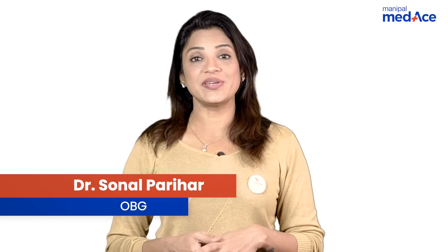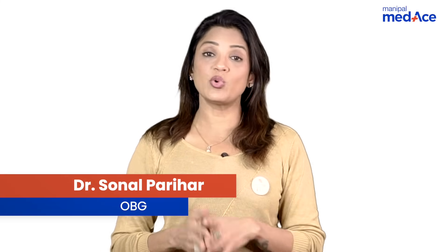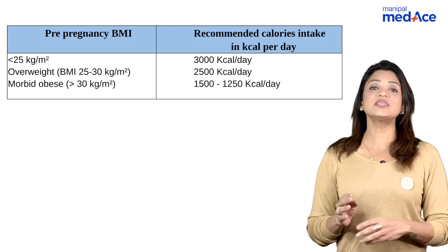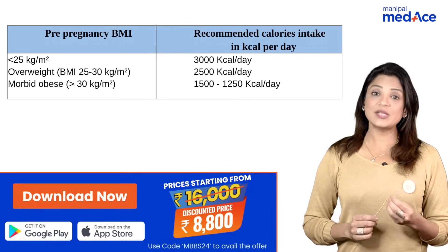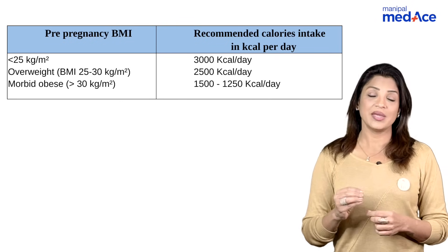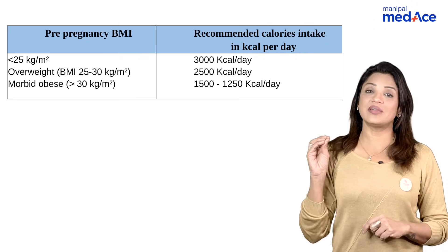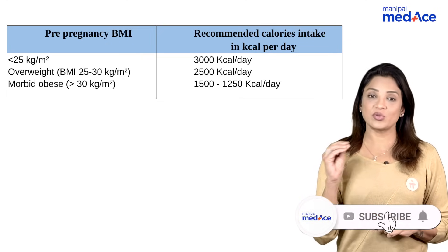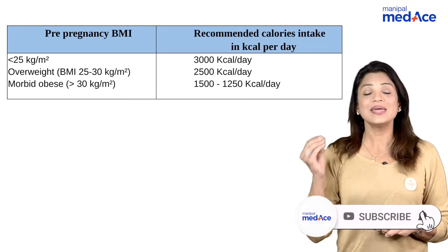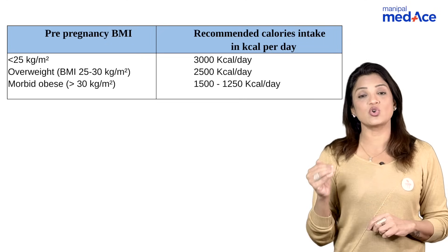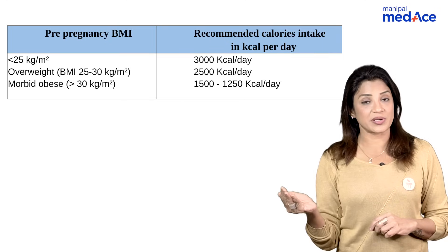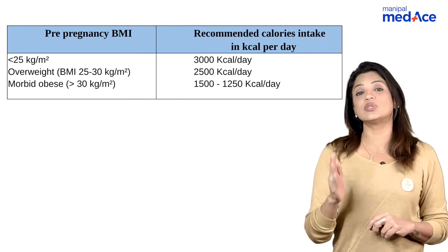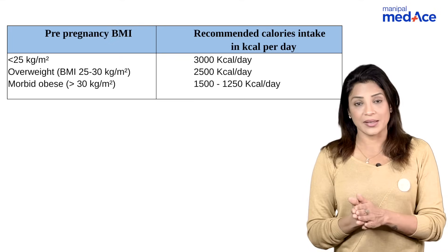Let's quickly revise management of diabetes in pregnancy — both overt diabetes as well as GDM. First, what are the recommended kilocalories for the pregnant patient depending upon her BMI? If the BMI is less than 25, the recommended kilocalories per day is 3000. If the BMI is between 25 to 30, calories are reduced to about 2500 kilocalories per day. If the BMI is above 30, she should not consume more than 1500 kilocalories per day.